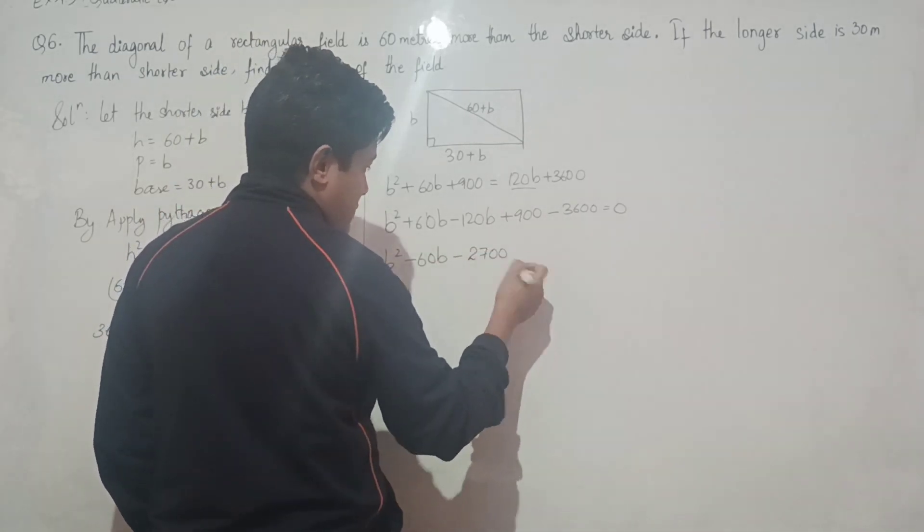This gives 60 plus or minus root of 14400, all divided by 2. 14400 is a perfect square: 12 times 12 times 10 times 10, which equals 120. So we get 60 plus 120 divided by 2, and 60 minus 120 divided by 2. This gives 180 over 2 equals 90, and negative 60 over 2 equals negative 30.